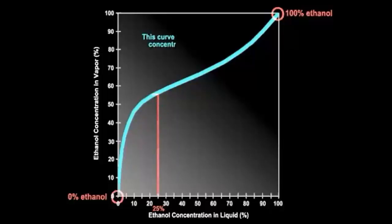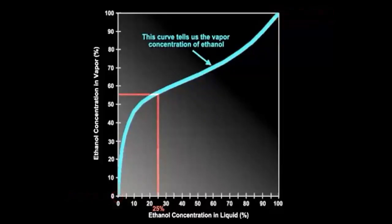For the example on the previous page, this curve will tell us what the vapor concentration of ethanol is. Recall that the liquid mixture is 25% ethanol and 75% water.